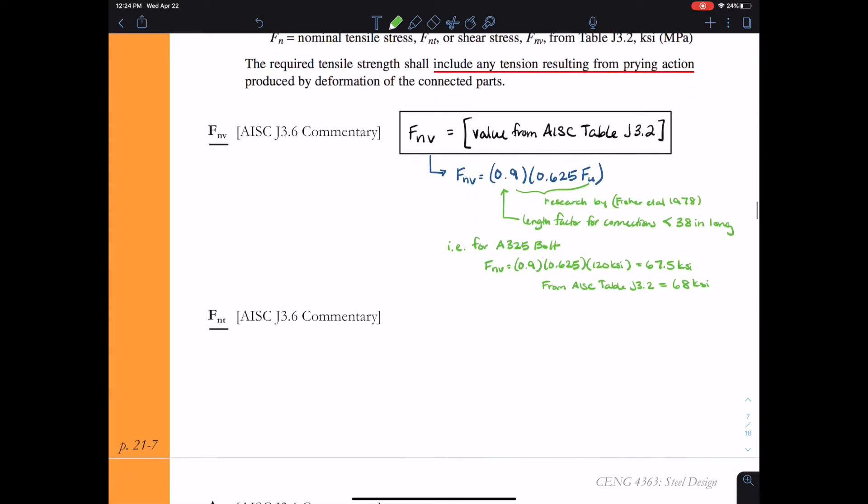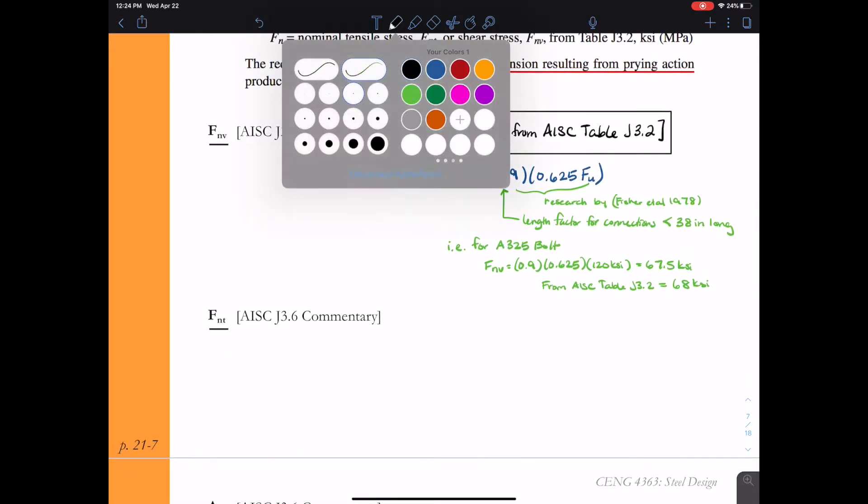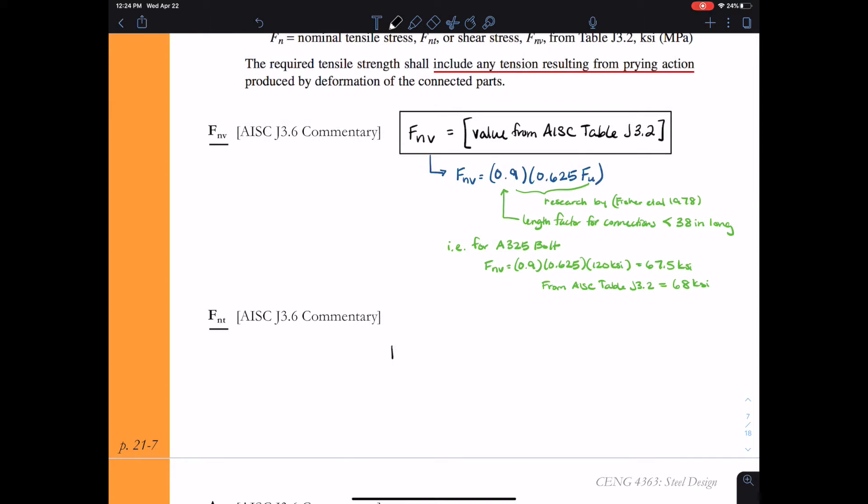For the nominal tensile strength I'm just going to point you right to this table, the same table J3.2. If you have any questions on where some of these values come from, I always recommend you can check the commentary to the specification. That's where I learned about the research that was done for shear strength of bolts. If you move to the commentary for section J3.2, you will find all this information given there.